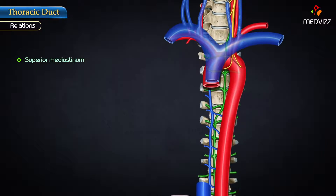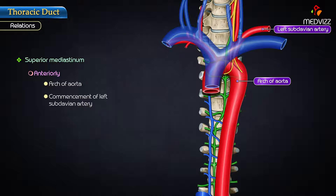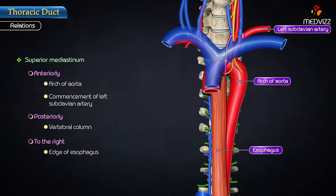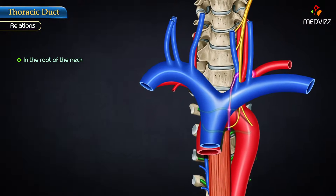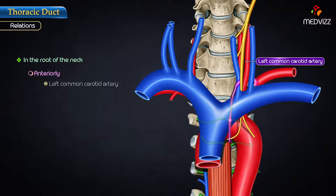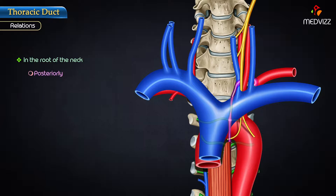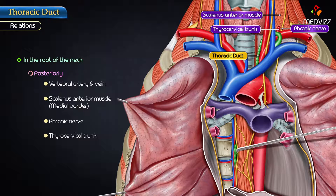Relations in the superior mediastinum. Anteriorly: the arch of the aorta and commencement of the left subclavian artery. Posteriorly: the vertebral column. On the right: the edge of the esophagus. On the left: the left lung and pleura. Relations in the root of the neck. Anteriorly: the left common carotid artery, left internal jugular vein, and left vagus nerve. Posteriorly: the vertebral artery and vein, the medial border of the scalenus anterior, phrenic nerve, and thyrocervical trunk and its branches.